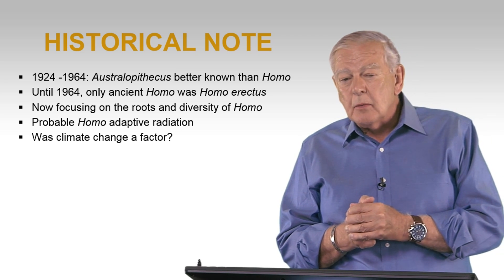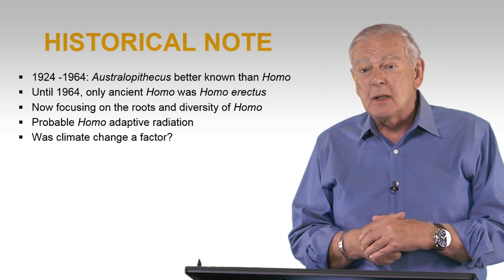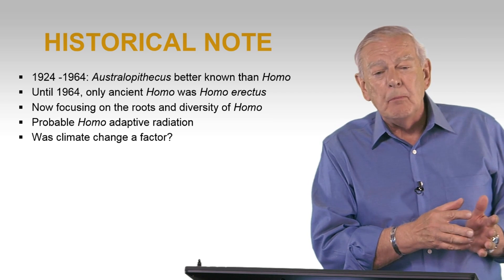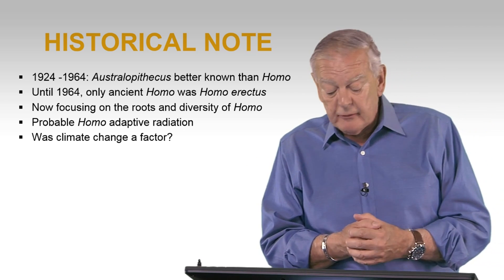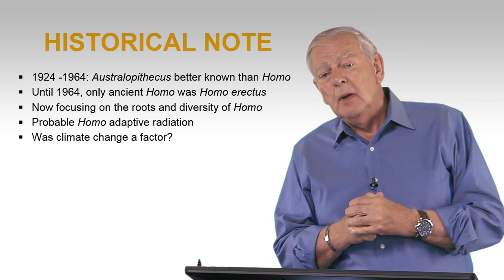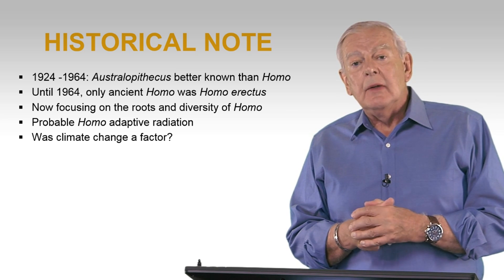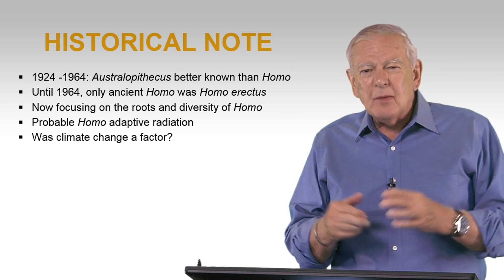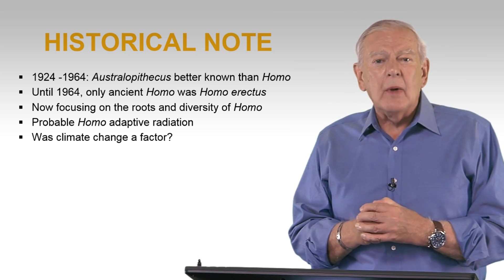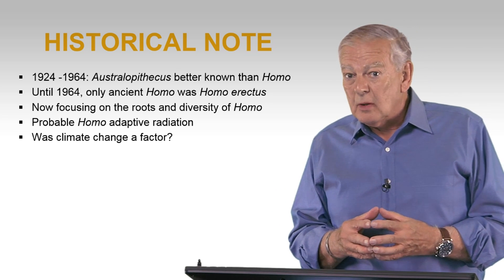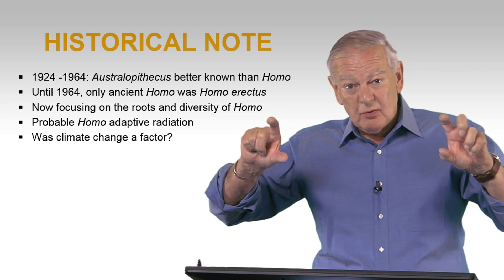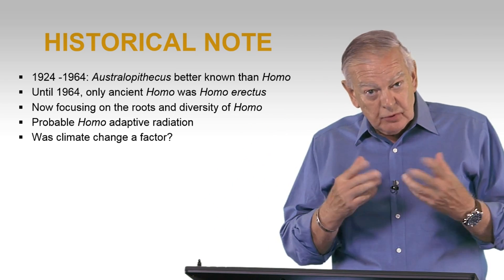Now in 1964, there was a major discovery — made in 1960 at Olduvai — that was considered to be the earliest, most ancient Homo. It's called Homo habilis. Up until that point, we had Homo neanderthalensis in Europe, something called Homo heidelbergensis, and Homo erectus, or Peking and Java man. But in 1964, a specimen about 1.8 million years old, a contemporary of Zinj or Olduvai hominid 5, Boisei, was found at Olduvai.